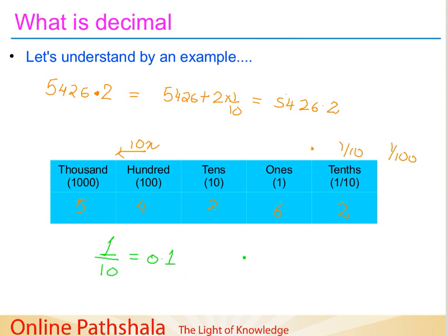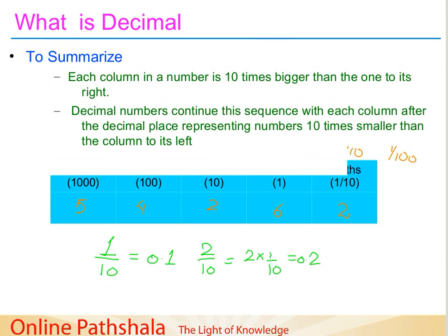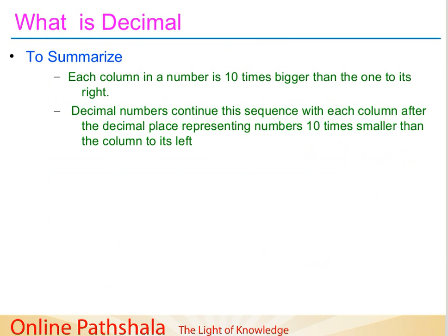So here, if I have 2/10, I represent it as 2 into 1/10, that is as 0.2. So, what is the decimal? Let us summarize: each column in a number is 10 times bigger than the one to its right. A decimal number continues the sequence, with each column after the decimal place representing numbers 10 times smaller than the column to its left.